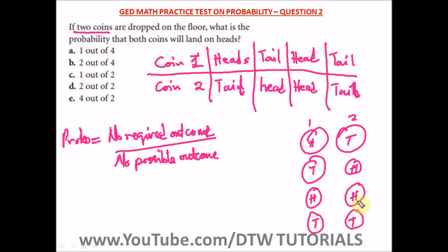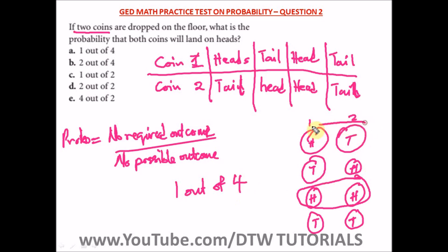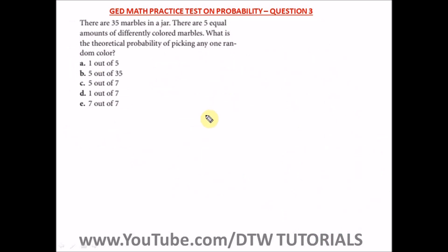In our next video on probability we'll look at throwing a die or dice. Probability should be taken slowly so you understand it — there's probability with coins and also with a die. Coming back to our question: what is the probability that both coins land on heads? We only have one outcome where both are heads out of four possible outcomes, so the answer is 1 out of 4. The correct answer is option A.